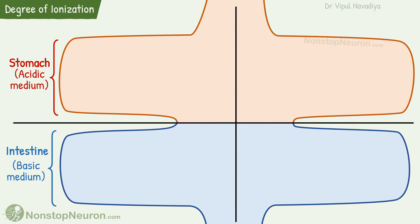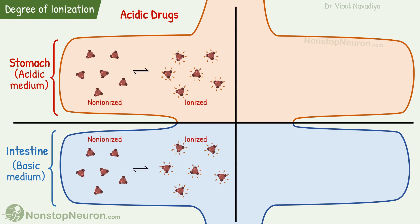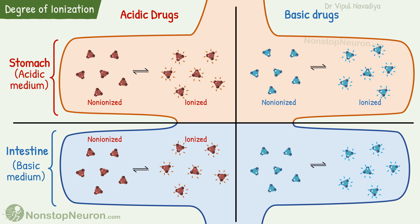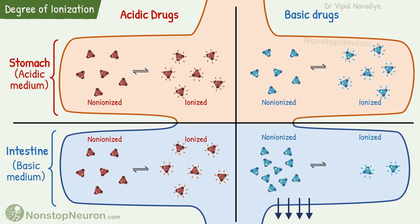Here we will see all possible scenarios — what happens with acidic drugs and basic drugs in the stomach and intestine. First, basic drugs in the intestine. Drug molecules exist in two interconvertible forms: non-ionized and ionized. Now intestinal secretion is basic. In such an environment, basic drugs largely get converted into non-ionized forms. As this form is absorbed better, basic drugs are absorbed better from the intestine.